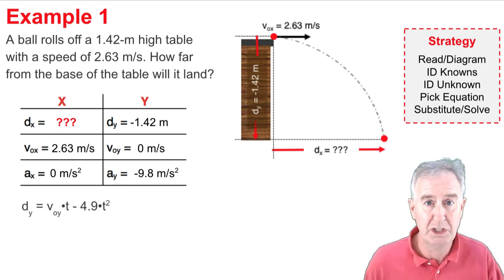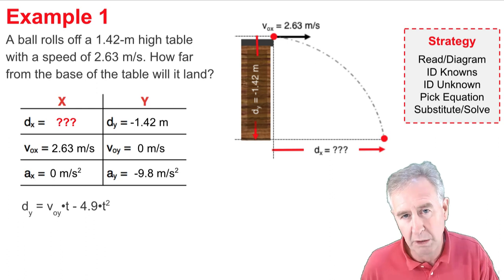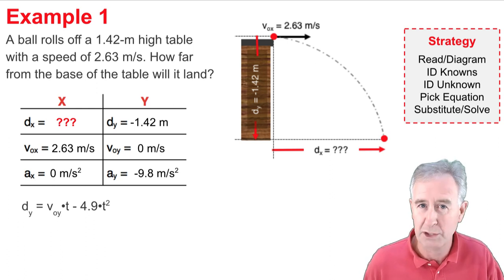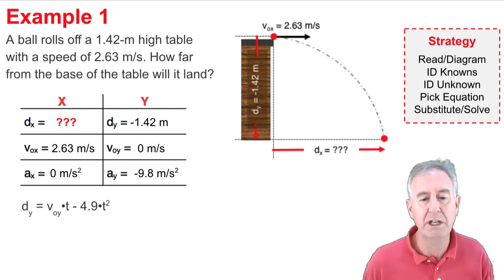and then I'm going to substitute values of dy and ay and voy into the equation. Now, the second term is negative 4.9 t squared, and that just comes from 1 half times negative 9.8 t squared. That's already been substituted for me. But, what I can do is put negative 1.42 meters in for dy